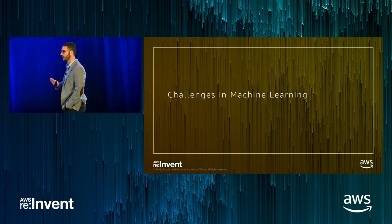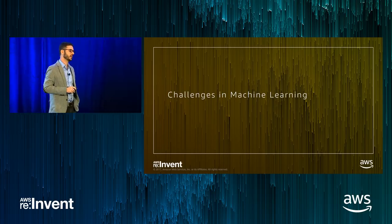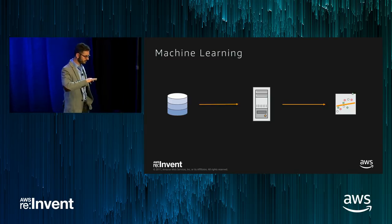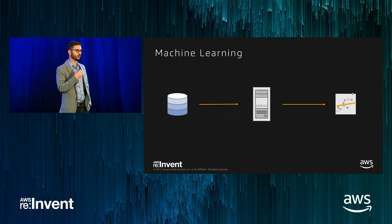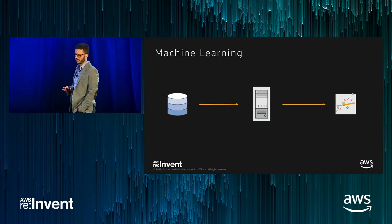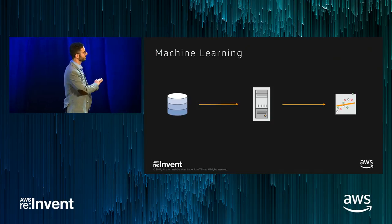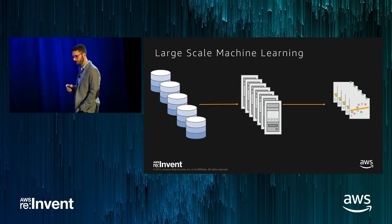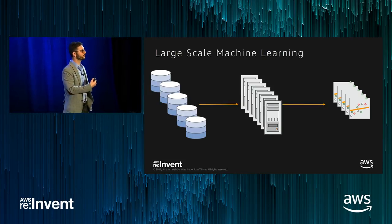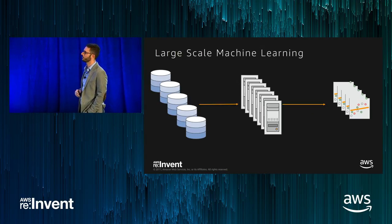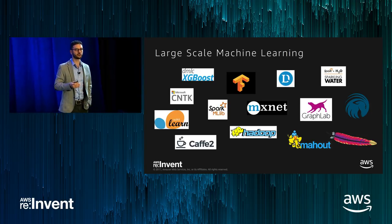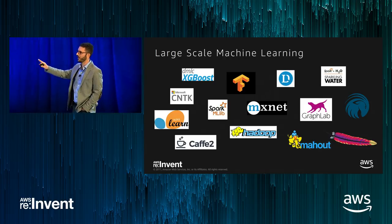Machine learning at the highest level is: you take data, compute, and create a model — a function that is then deployed and used. When we work with our customers, most of them have too much data to process on one machine, so they need many machines and very complicated models. There are many open source and non-open source software solutions that help — this is just a tiny sample of some of those.